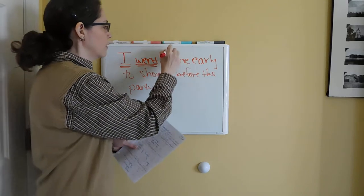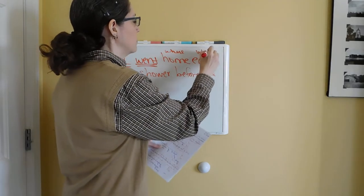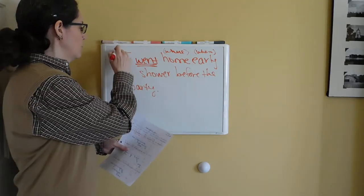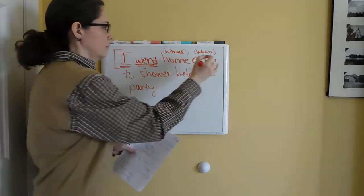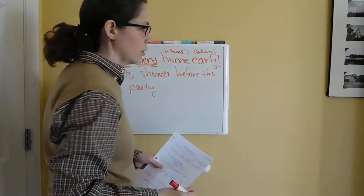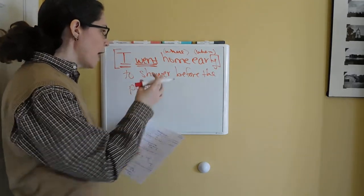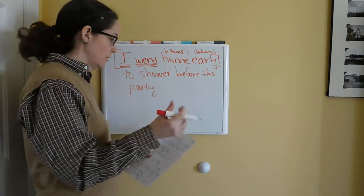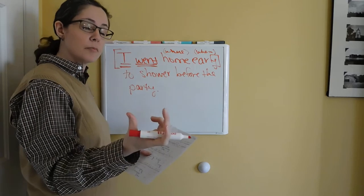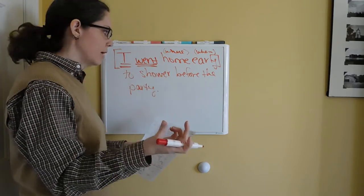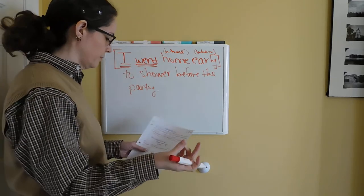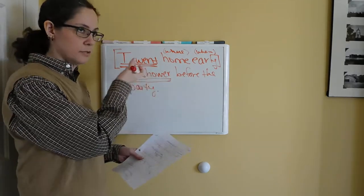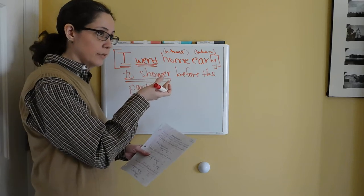You went home where, early when. Keep track of that information. The main clause — you could just stop at 'I went home early' — but you didn't. You added more information, and when you did that, you added an infinitive: 'to shower.' This is the infinitive form of the verb 'shower.' So this is another verb in its infinitive form, and this is going to create the infinitive phrase in the sentence.